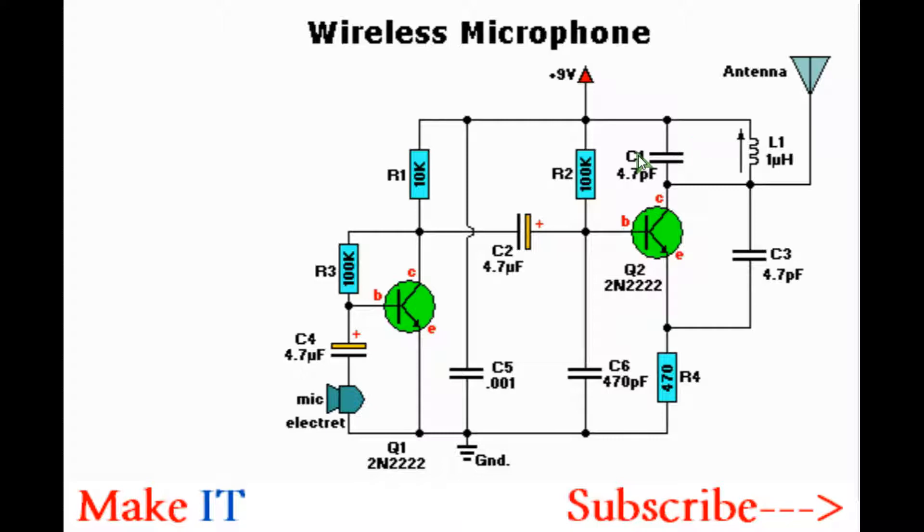Ensure that the output frequency is somewhere between 88 and 108 MHz, because that's the reception range for most FM radios.